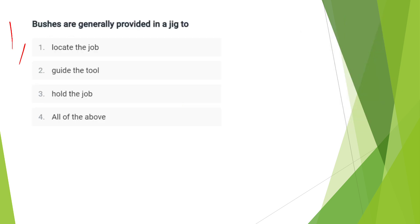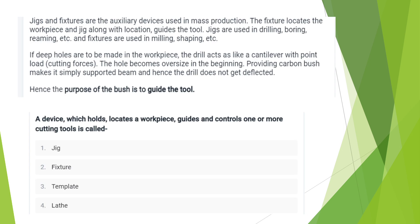First question: Bushes are generally provided in jigs to — locate the jigs, hold the jigs, or guide the tool? The answer is Option B: Guide the Tool.